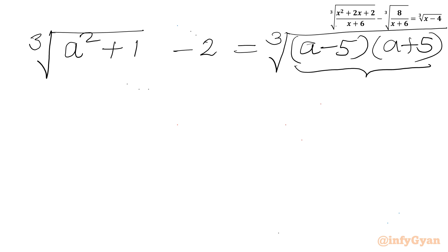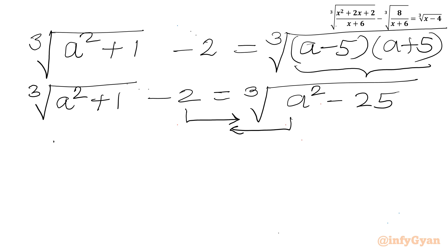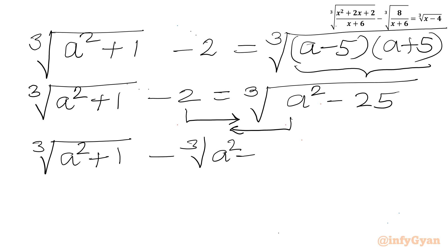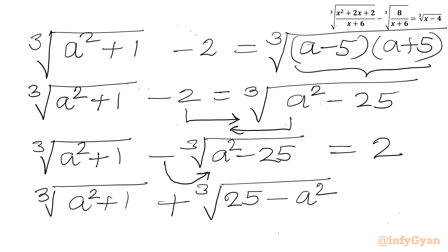We know that (a + b)(a − b) = a² − b². So cube root of a² + 1 minus 2 equals cube root of a² − 25. Now I will take the cube root of a² − 25 to the LHS and −2 to the RHS, and take the minus sign inside the radical: cube root of a² + 1 plus cube root of 25 − a² equals 2.